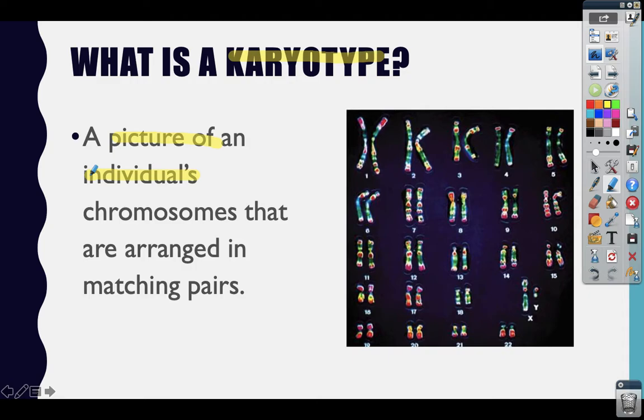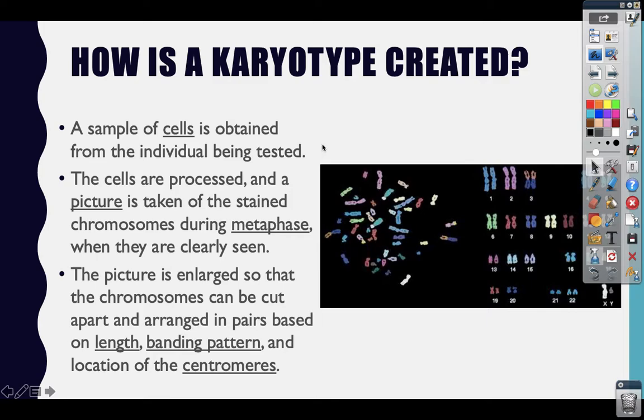If you notice on a karyotype, the chromosomes are arranged in matching pairs according to their banding patterns. Karyotypes are made when we take a set of cells from a person and stain them using a dye that enables the chromosomes to be readily seen. This stain produces a banding pattern.